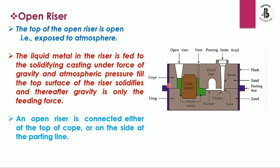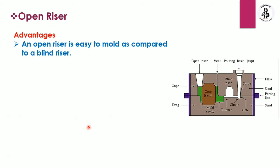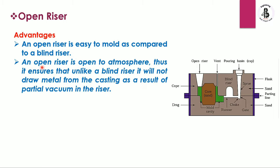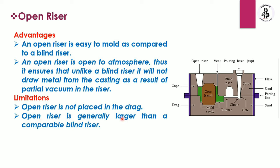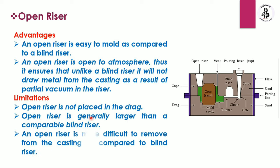As from the complexity of the job it will be located, but basically it is on the top of the cope side. An open riser is generally cylindrical in shape. Some advantages: an open riser is easy to mold as compared to a blind riser. An open riser is open to the atmosphere, thus ensuring that, unlike a blind riser, it will not draw metal from the castings as a result of partial vacuum in the riser. Limitations: an open riser cannot be placed in the drag, open risers are generally larger than comparable blind risers, and open risers are more difficult to remove from a casting.